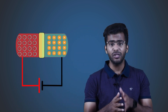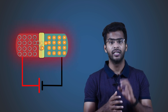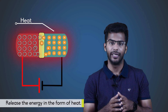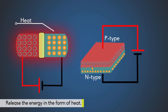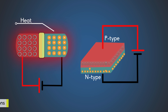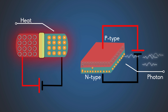The recombination of holes and electrons in a silicon or a germanium semiconductor will release the energy in the form of heat. Whereas, the recombination of holes and electrons in the gallium arsenide semiconductor releases the energy in the form of light or photons. This is the reason to use gallium arsenide as an active medium in the semiconductor laser.